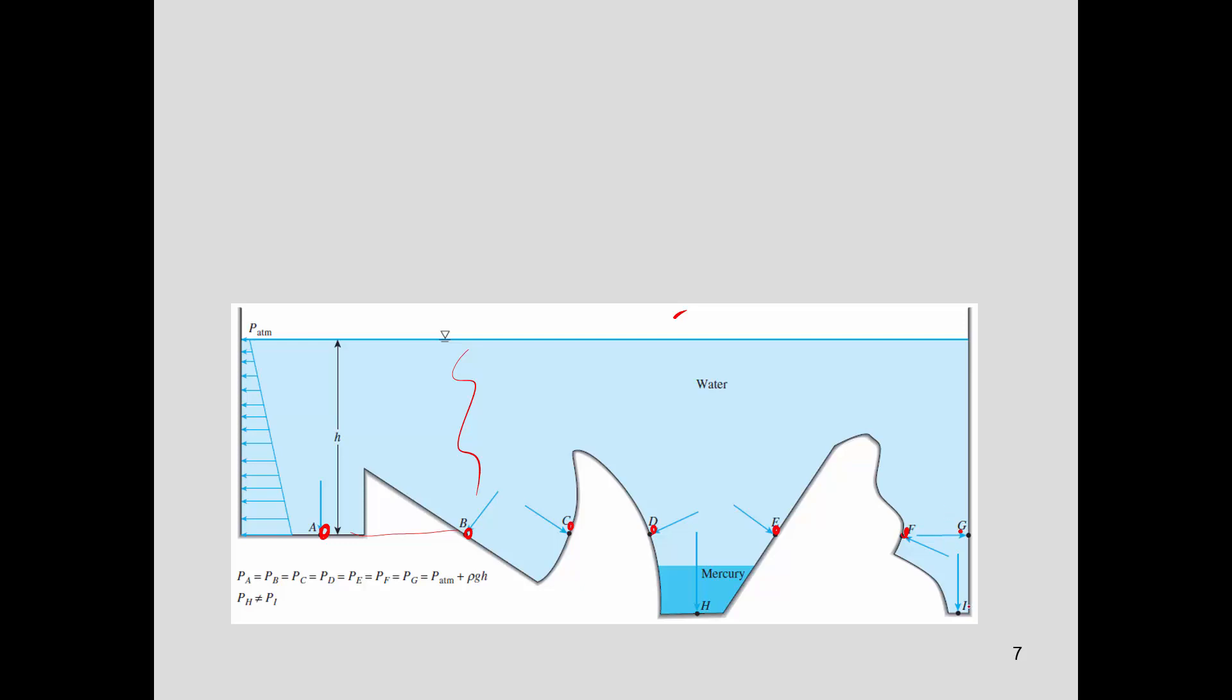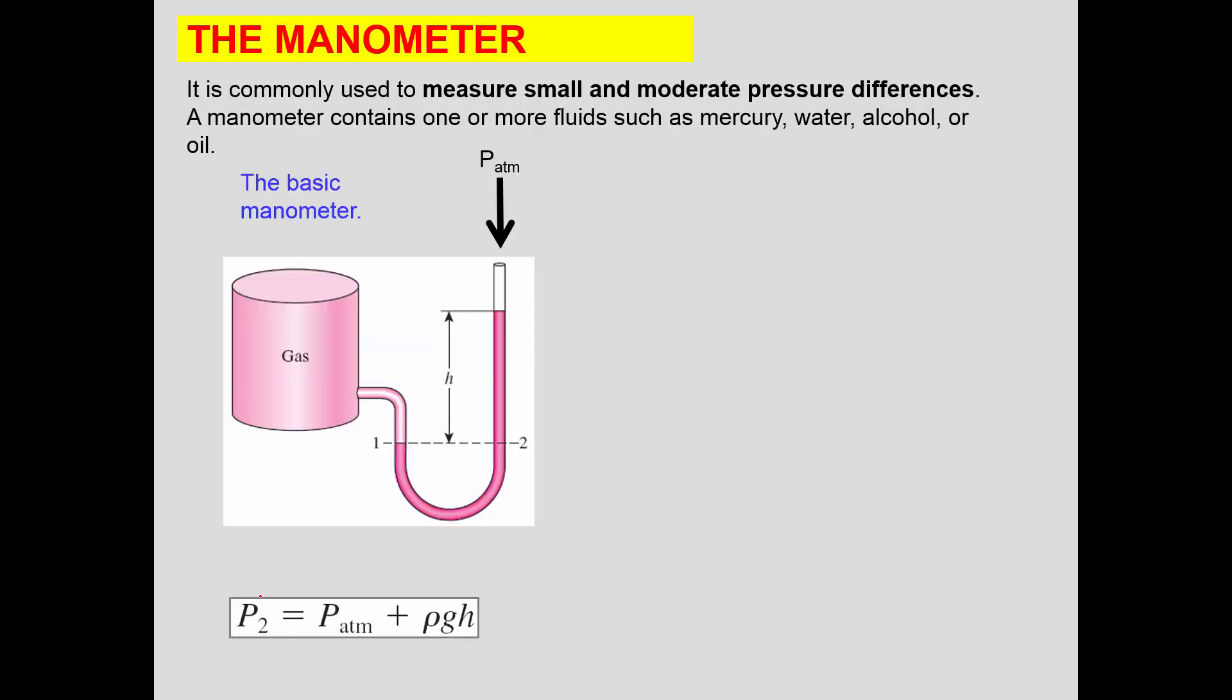If we have a different fluid, it's not the same. So like here, H and I are at the same level. Here I have mercury, and here I have water, so the pressures in H and I are not going to be the same.